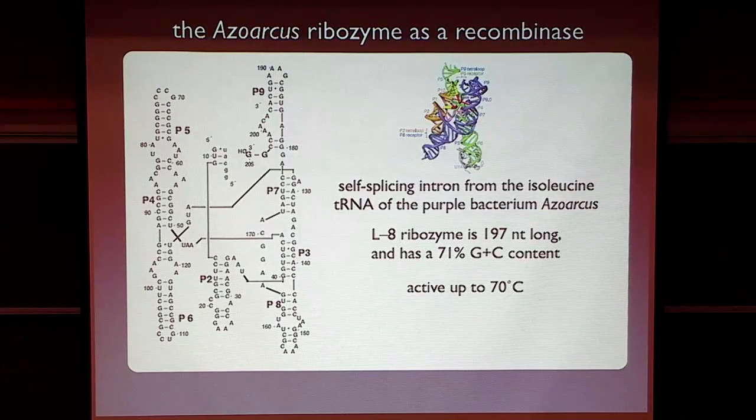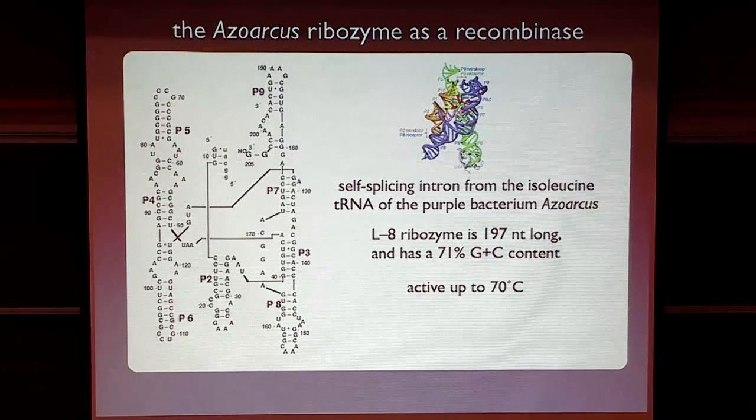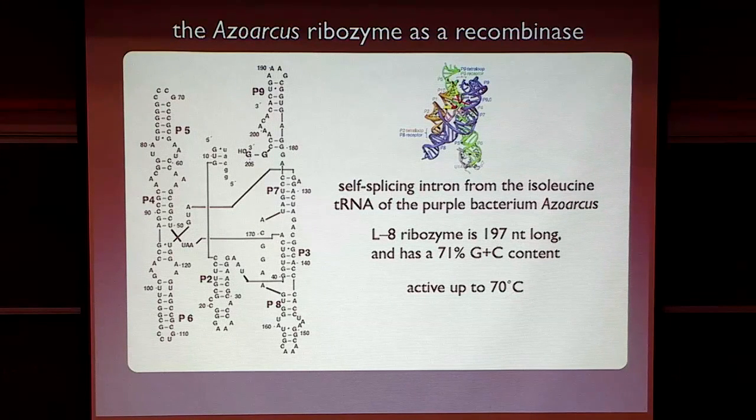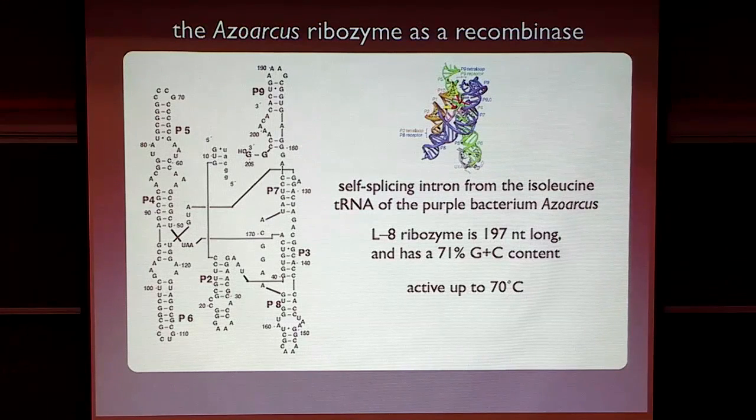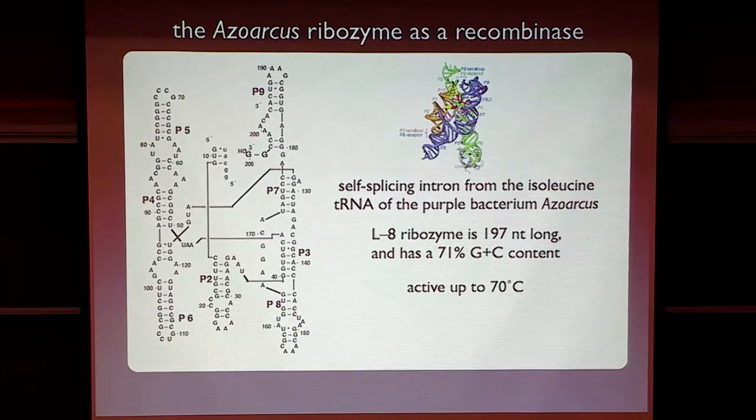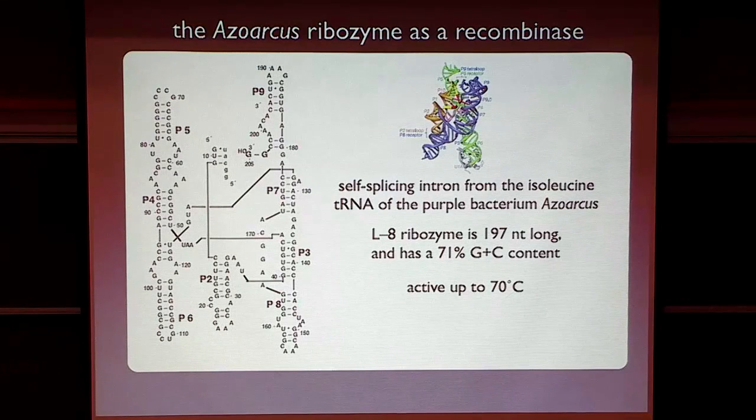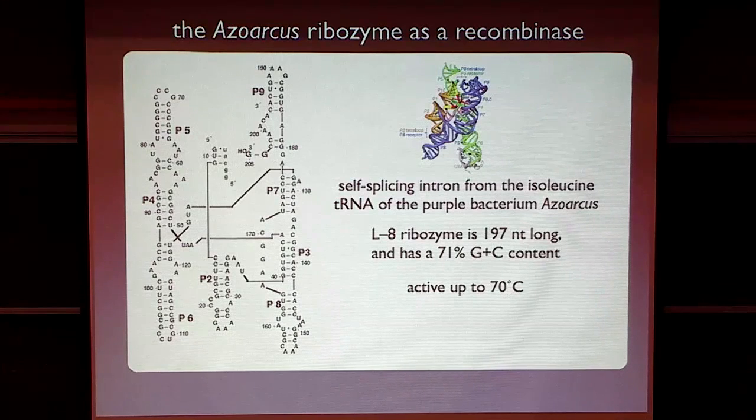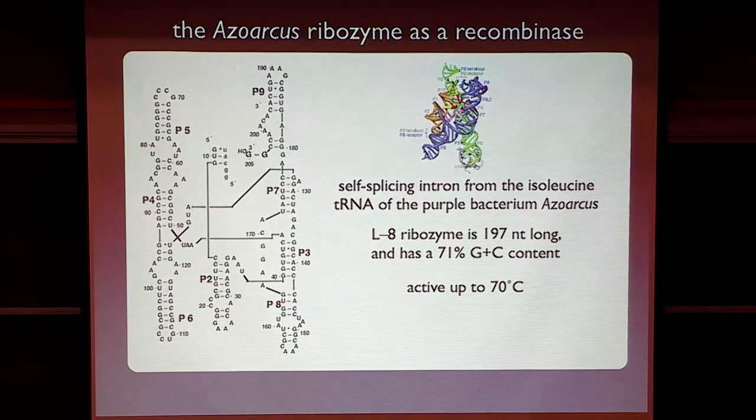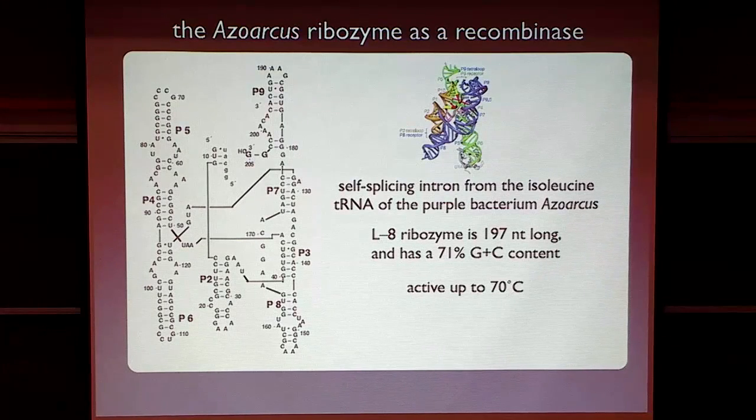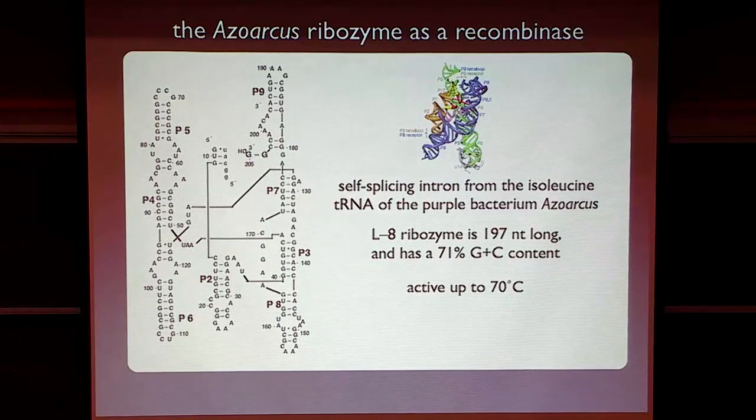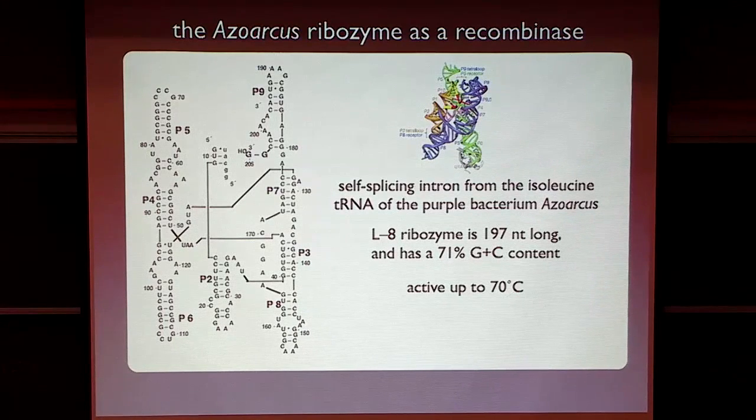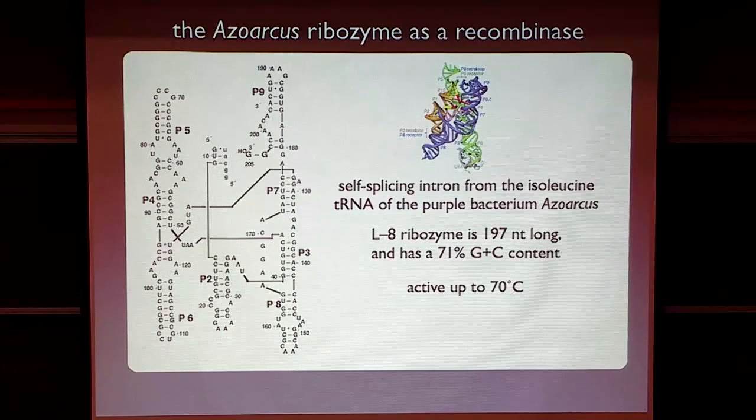So the ribozyme that I settled on ultimately to do these kinds of reactions is the azoarchus ribozyme. This is a relatively short group 1 intron, it's about 200 nucleotides long, and it's found in the isoleucyl tRNA of the purple bacterium azoarchus. The primary and secondary structure is shown on the left. Scott Strobel crystallized it at Yale a few years back, and there's a tertiary structure on the top. This is a very robust ribozyme. It's active up to very high temperatures, and I thought this would make a good recombinase ribozyme.